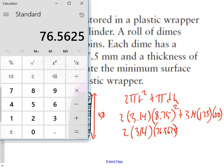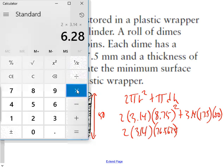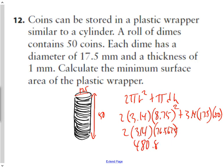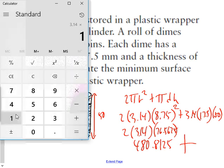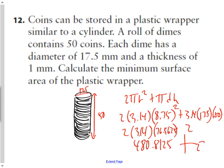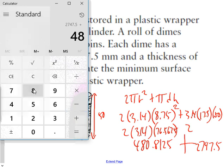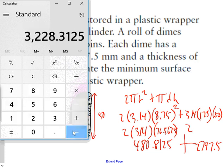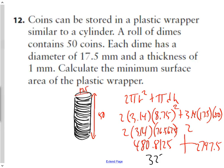Multiplying 2 × 3.14 × 76.5625 gives 480.8125 for the two circles. The side rectangle: 3.14 × 17.5 × 50 = 2,747.5. Adding 480.8125 + 2,747.5 gives a final surface area of approximately 3,228 mm² of plastic required to wrap the 50 dimes.